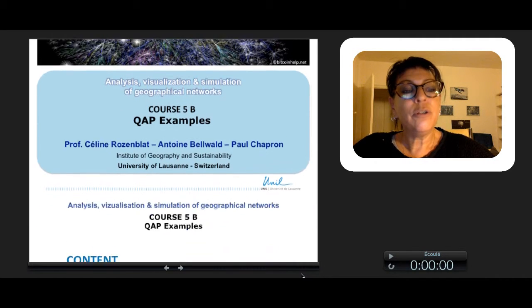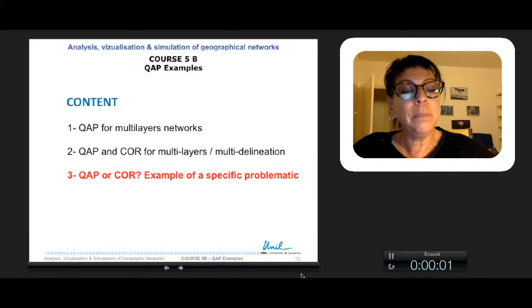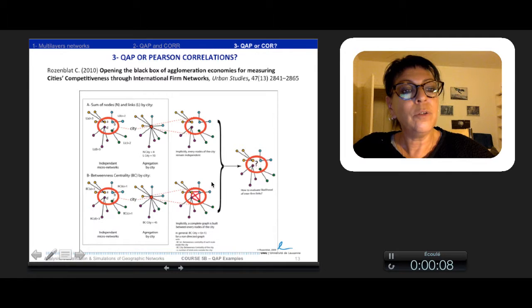The last example treats a specific topic where we used correlation indices for a specific problematic. The question appears when one aggregates micro-networks like multinational firms by city. When one makes a sum of linkages by city, for example with a degree, one supposes implicitly that there are no relations at all between the different firms located inside the city.